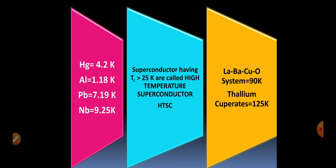The critical temperature values of aluminum and other materials — superconductors having a critical temperature greater than 25 Kelvin are called high-temperature superconductors. An example of a high-temperature superconductor is the Lanthanum-Barium-Copper oxide system, whose critical temperature is 90 Kelvin. Another example is thallium cuprates, with a critical temperature of 125 Kelvin, which indicates their practical utility.